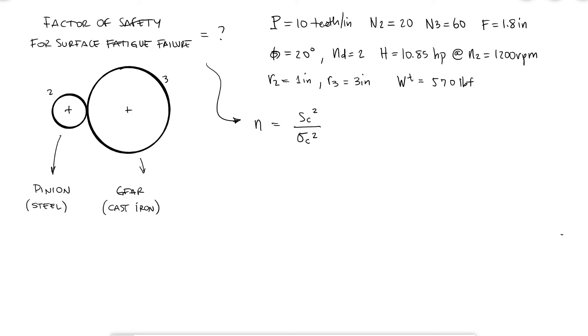For the surface endurance strength, we'll use the information of the example I mentioned before. It will be equal to 32% of the Brinell hardness, which we can easily find for cast iron.